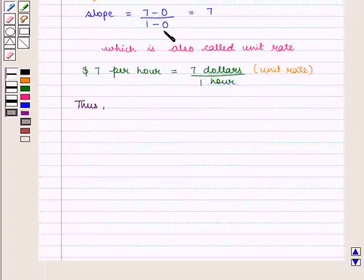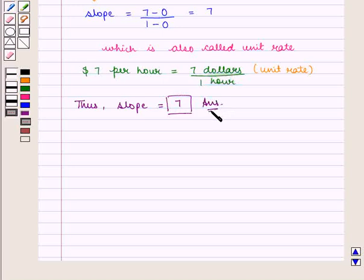Thus, we get the numerical value of slope as 7, which is the required answer. This completes our session. Hope you enjoyed this session. Thank you.